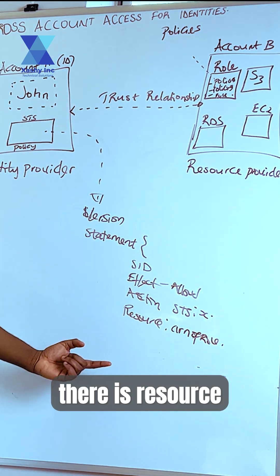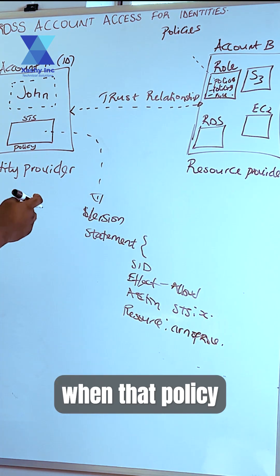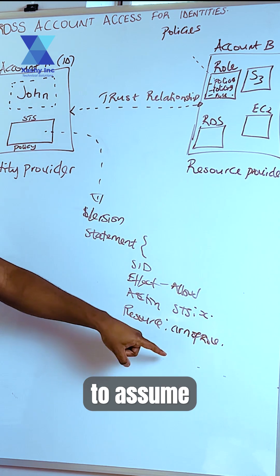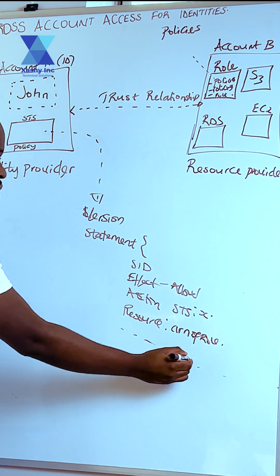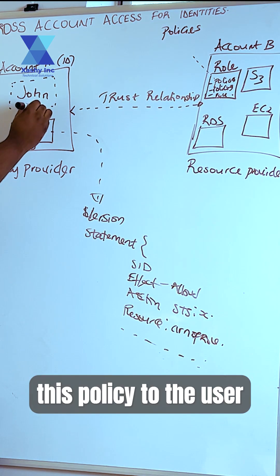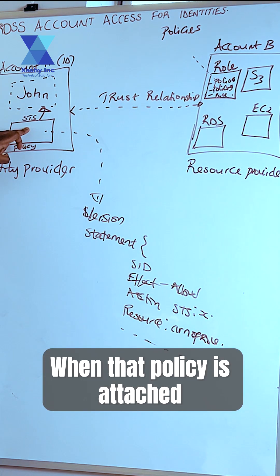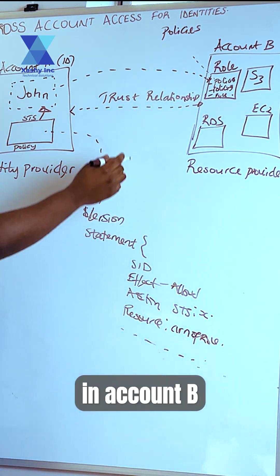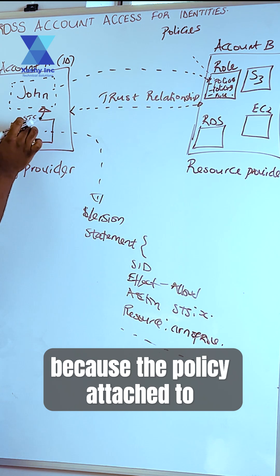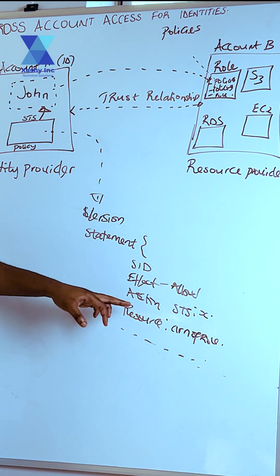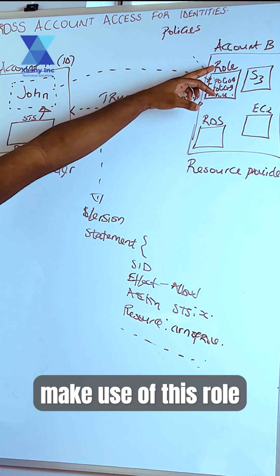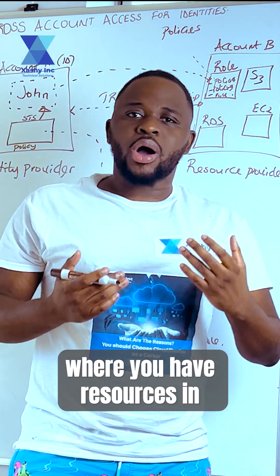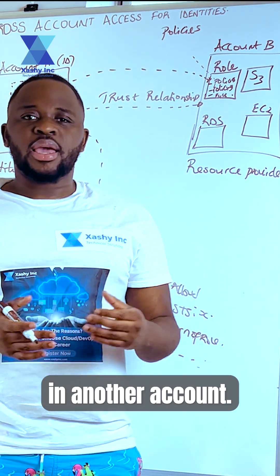The resource is the ARN of the role because when that policy is attached to the user John, the user will be allowed to use STS to assume the role in account B. When that policy is attached to the user John, he can now assume this role in account B, because the policy gives him temporal access to make use of this role. That is how you establish a trust relationship between both accounts where you have resources in one account and identities in another.